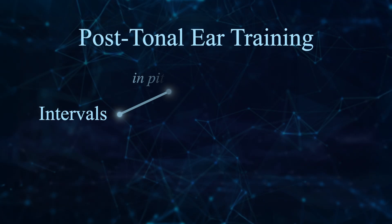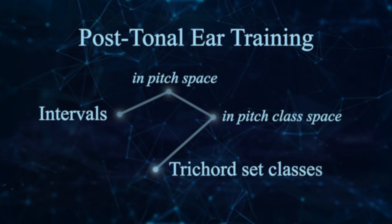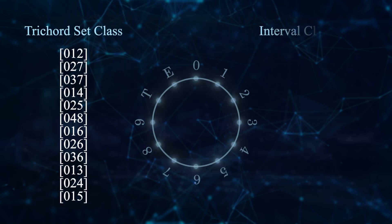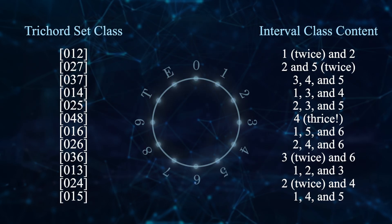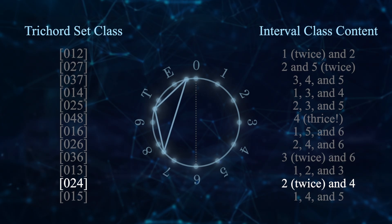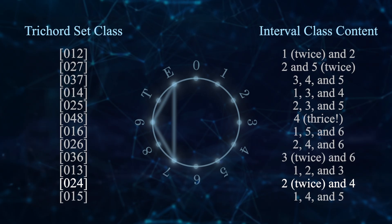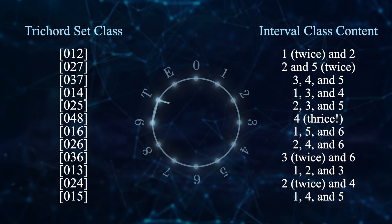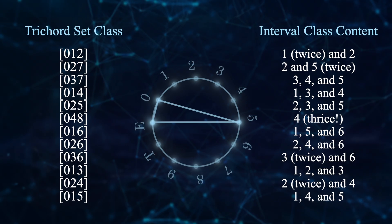Once you can hear interval classes, you have a great framework for identifying trichord set classes according to their interval content because each of the 12 trichord set classes has a unique combination of interval classes measured between each pair of notes. This is a less technical way to think about trichords since it doesn't require dealing with chord inversions and an axis of symmetry. Some excerpts may be harder to pick out individual intervals, and for that reason, you'll also want to associate sonorities with your own emotional responses to them.